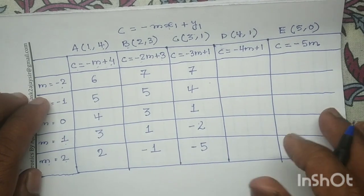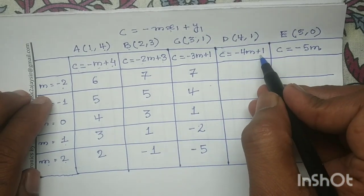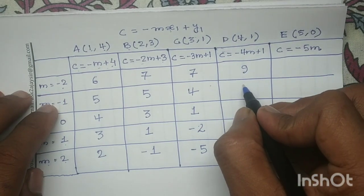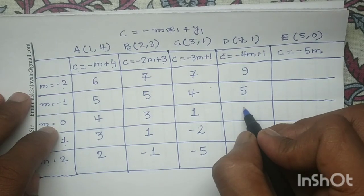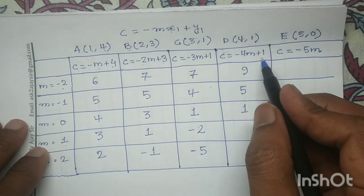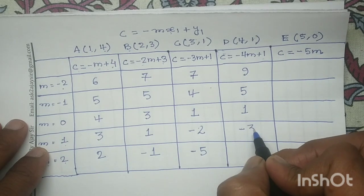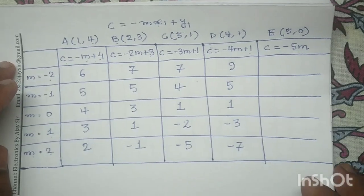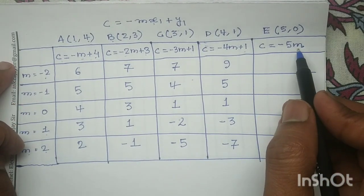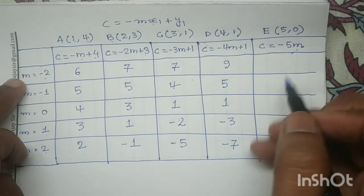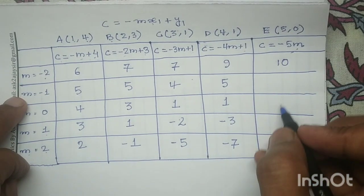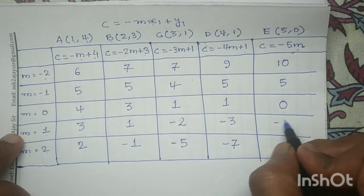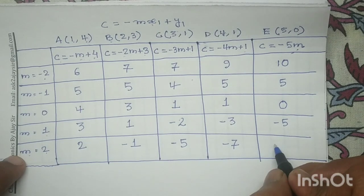In the fourth column, the equation is −4m + 1. Substituting m=−2 gives 9; m=−1 gives 5; m=0 gives 1; m=1 gives −3; and m=2 gives −7. In the last column, the equation is −5m: m=−2 gives 10; m=−1 gives 5; m=0 gives 0; m=1 gives −5; and m=2 gives −10.